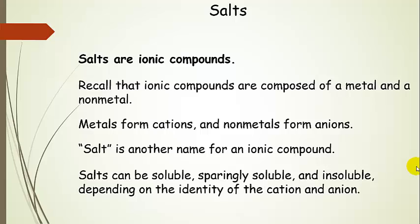In this context, we're going to talk about salts. Salts are ionic compounds — we've seen these especially during naming, where we were looking at the charges on the ions. Ionic compounds are basically an anion and a cation held together by electrostatic attractions, composed of a metal and a nonmetal, where metals form cations and nonmetals form anions. Salt is just another name for an ionic compound, and these salts can be soluble, sparingly soluble, or insoluble depending on what the cation and anion are.